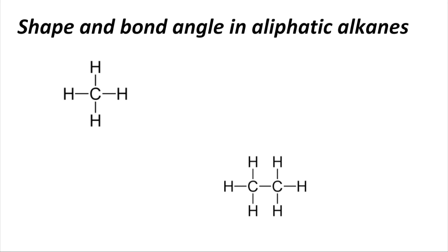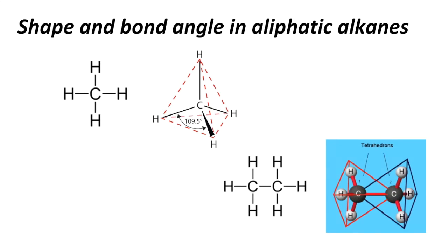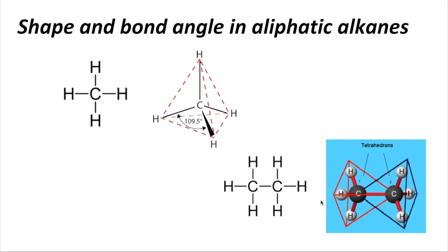A little bit about the shape and bond angle in aliphatic alkanes. These displayed formulae are two-dimensional, and sometimes students think the bond angle is 90 degrees — but it's not. It's actually a tetrahedral shape with a bond angle of 109.5 degrees. The same goes for ethane too; in effect we've got two tetrahedrons stuck together. All alkanes have the tetrahedral arrangement around the carbons with that 109.5 degree bond angle.